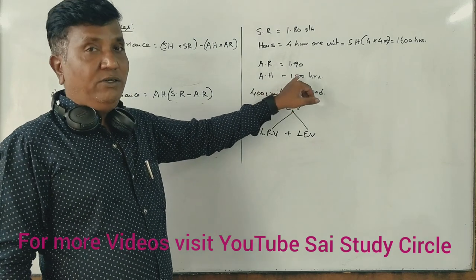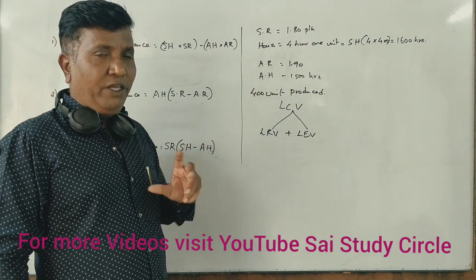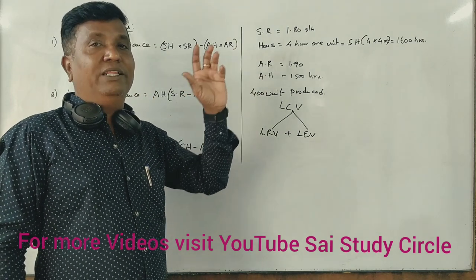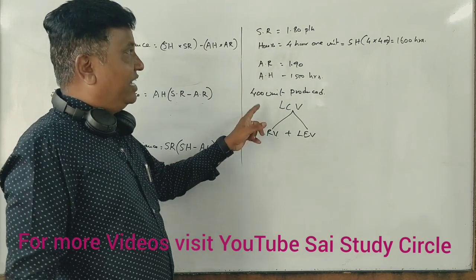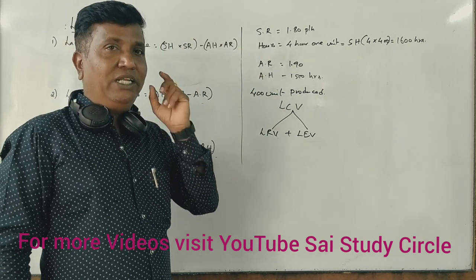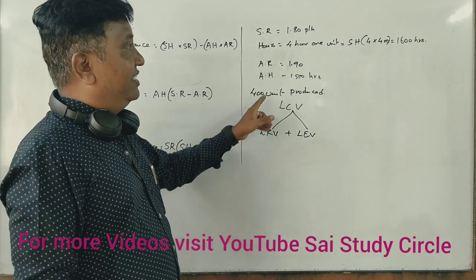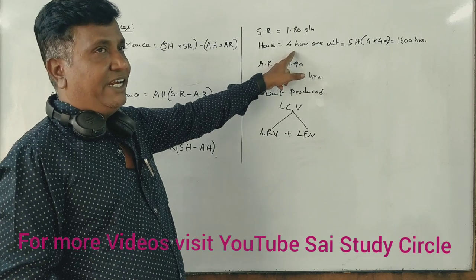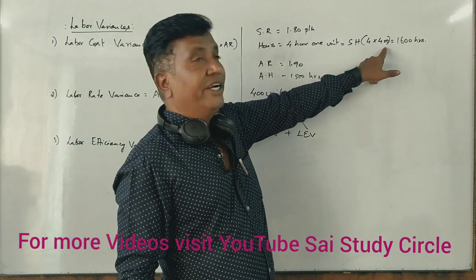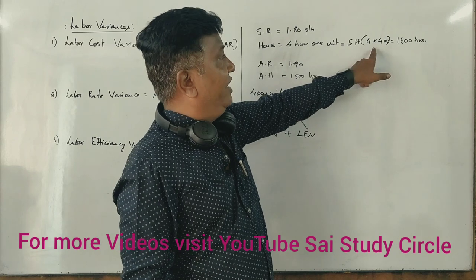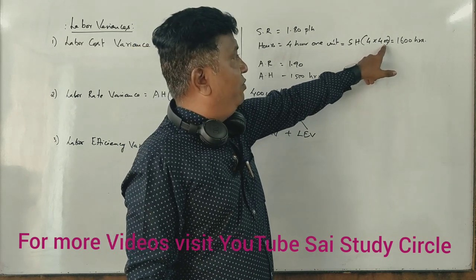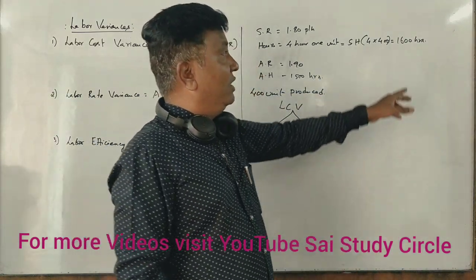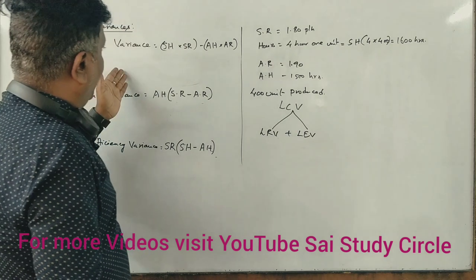The actual hours is not the standard hours. We have to put the standard hours. If 4 hours per unit, 400 units manufactured, total is 1,600 hours. This is the formula.